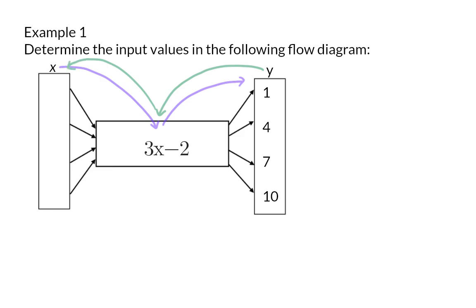The original function consisted of first multiplying by 3 and then subtracting 2. We are now going to do all of this backwards. This means we are going to start with our y value, our output value, and add 2, because that is the inverse operation of minus 2. Next we're going to do the inverse operation of times by 3, which is divide by 3. Now I'm going to use this new function and my output values to determine the input values.